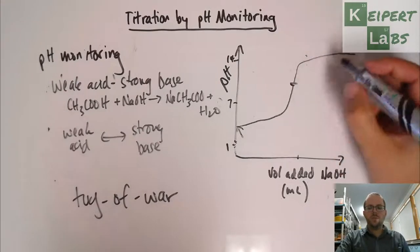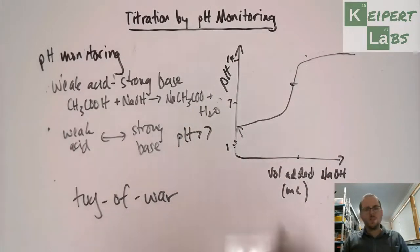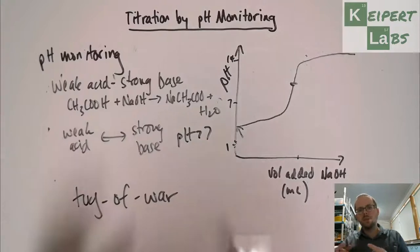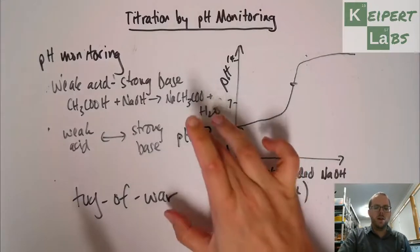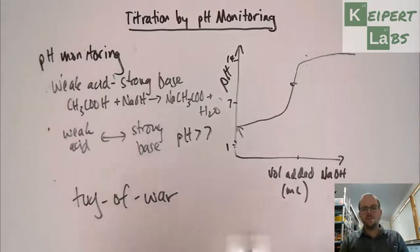And then our equivalence point is going to be pH greater than 7. Same sort of idea. The strong base is more able to pull the pH towards its side. So the pH of the equivalence point is going to be greater than 7.